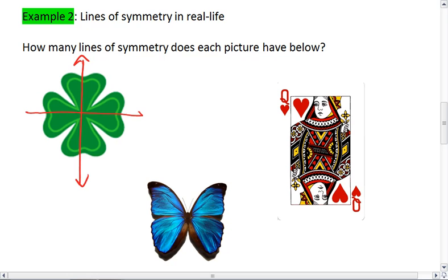We could also go left to right. So there's two already. But we could also cut through diagonally, and we get a line of symmetry. And we could cut through diagonally the other way. So this clover has four lines of symmetry.